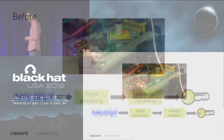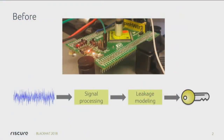Before, when we were doing side-channel analysis, the main steps are: we take a chip, we measure its power consumption, we do some fancy signal processing, we do some leakage modeling, and then out comes the cryptographic key, if we're successful. If you look at academic literature, they've studied a lot of this leakage modeling and the key retrieval part, which is kind of the science in side-channel analysis. But there's also really an art and kind of human skill involved in getting your signals acquired in the right way and transforming them such that you can actually do the leakage modeling and the key extraction.